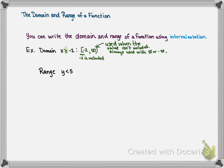Let's look at the range: y is less than 5. What is the smallest value that y can be? If it's all the values less than 5, that starts at negative infinity. Negative infinity gets the curved parenthesis, and then the largest value is 5. Five also gets a curved parenthesis because there is no equal bar included, so 5 is not included in the range.